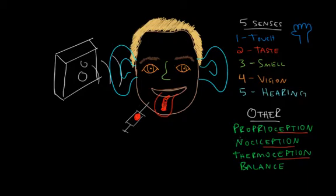So this whole set of nine—proprioception, nociception, thermoception, and balance, in addition to the basic five: touch, taste, smell, vision, and hearing—form the full complement of our sensory abilities.